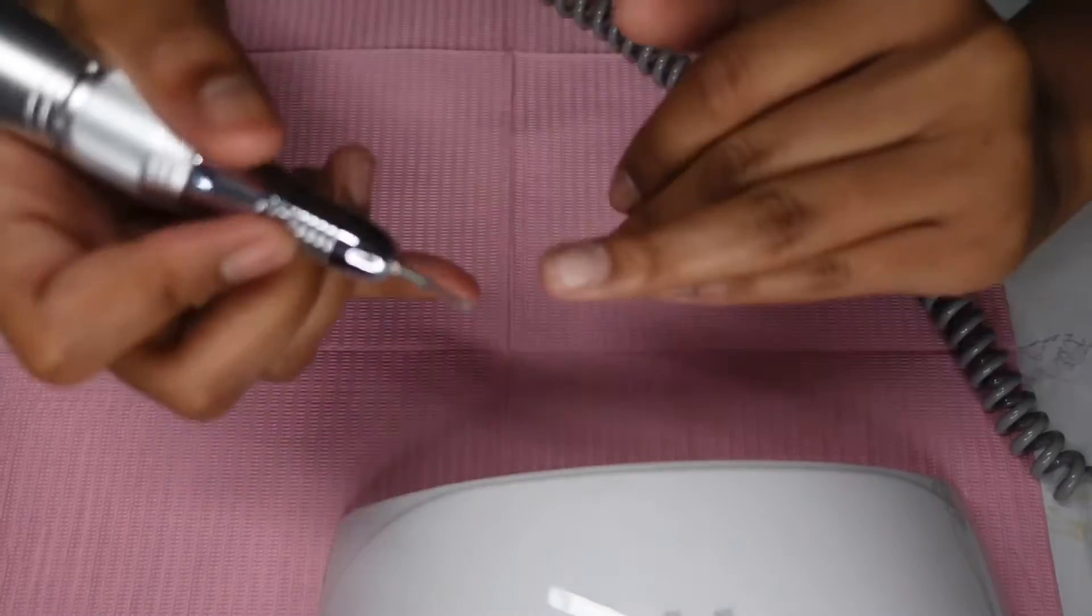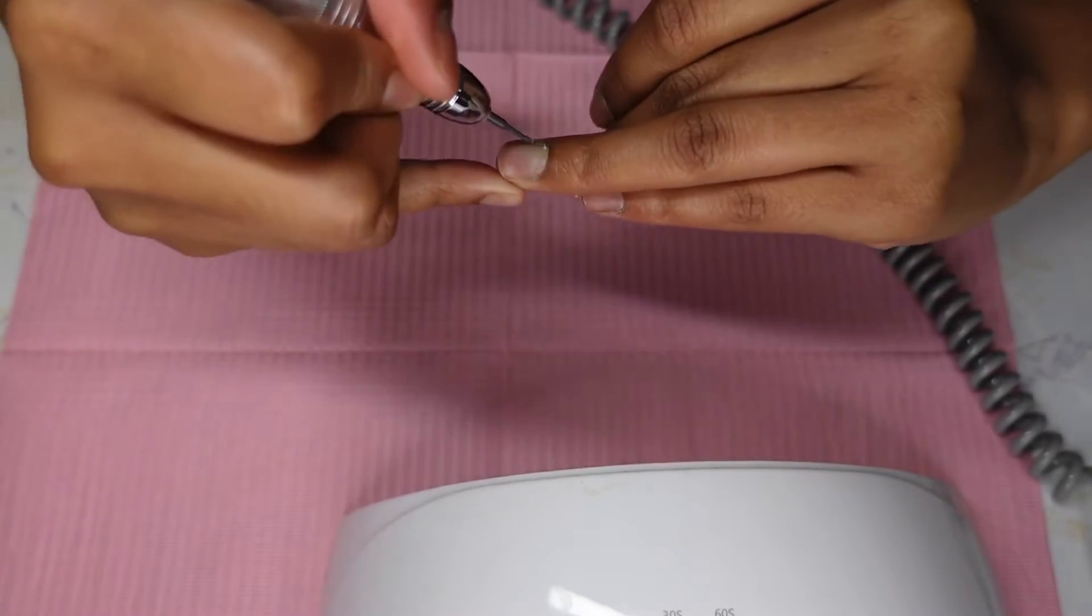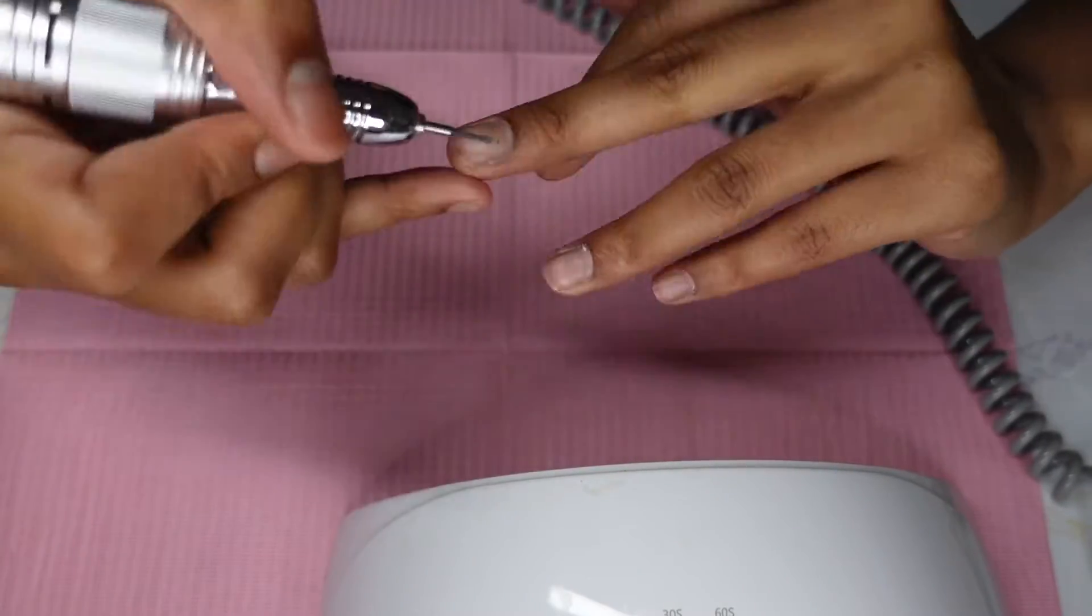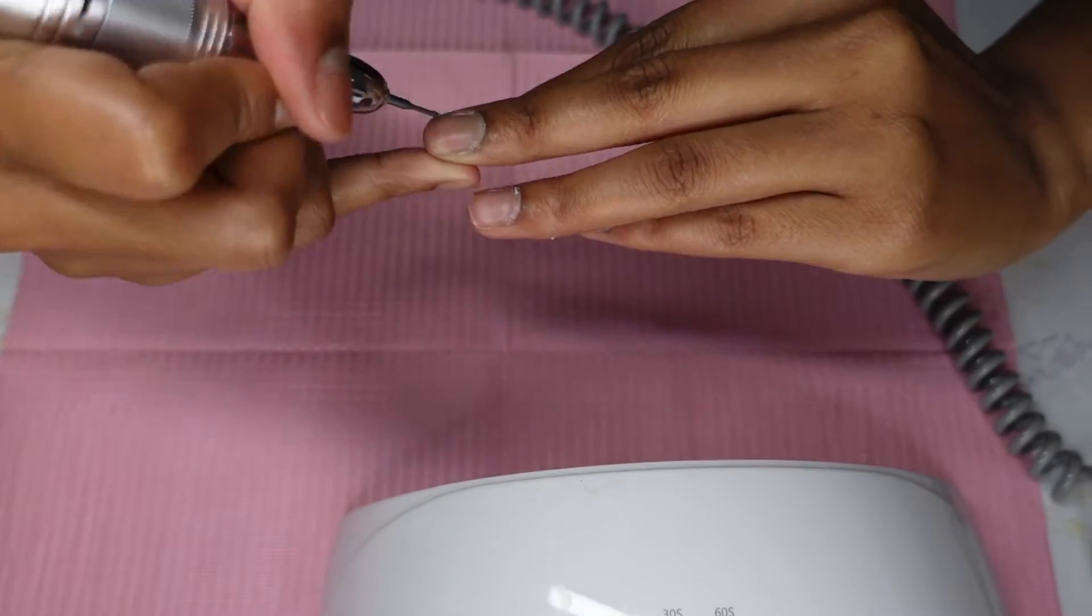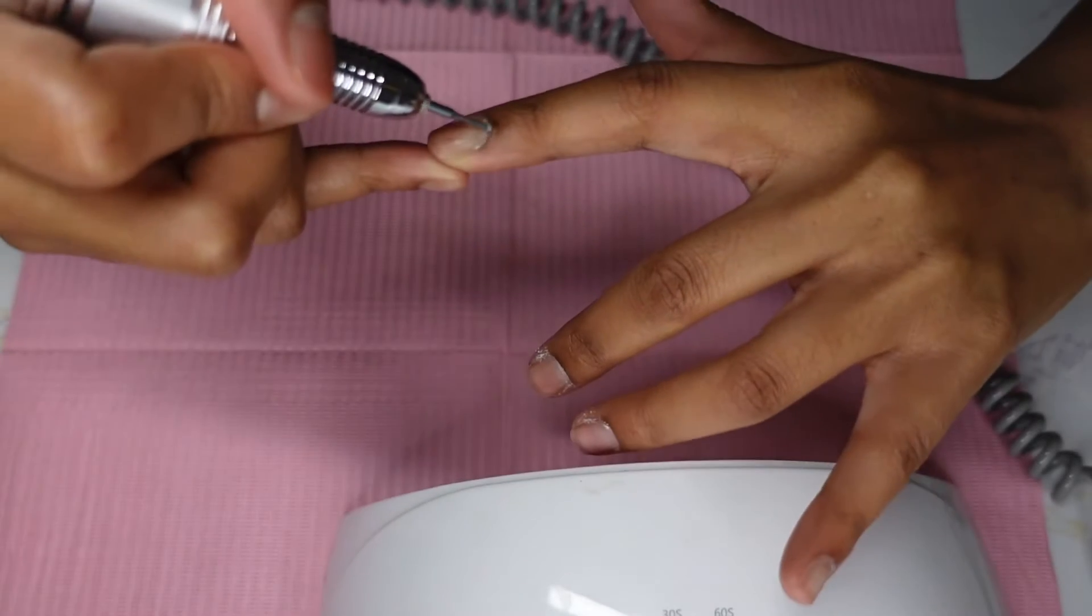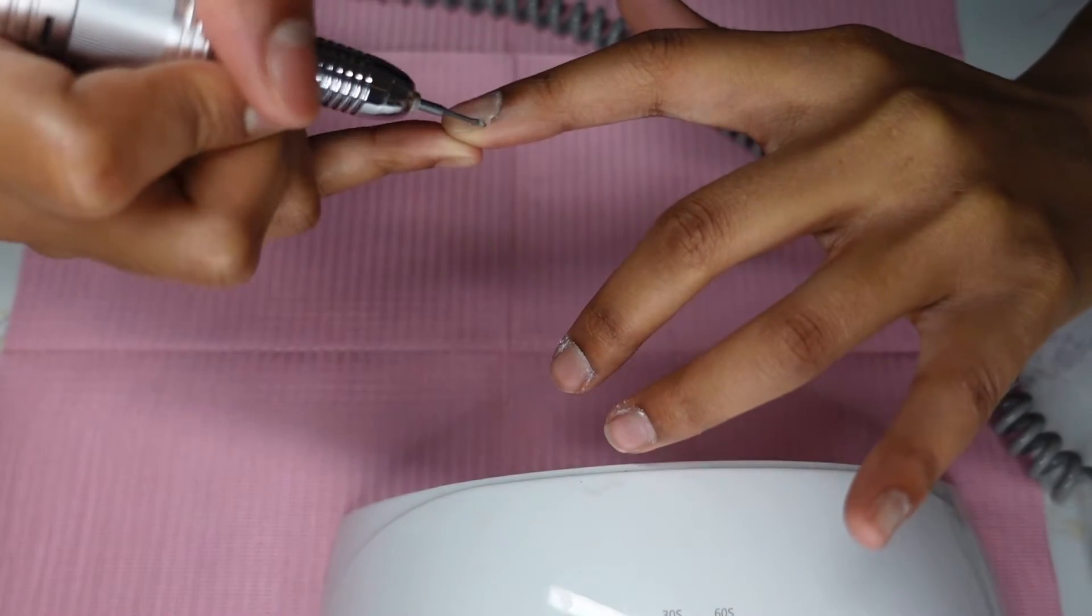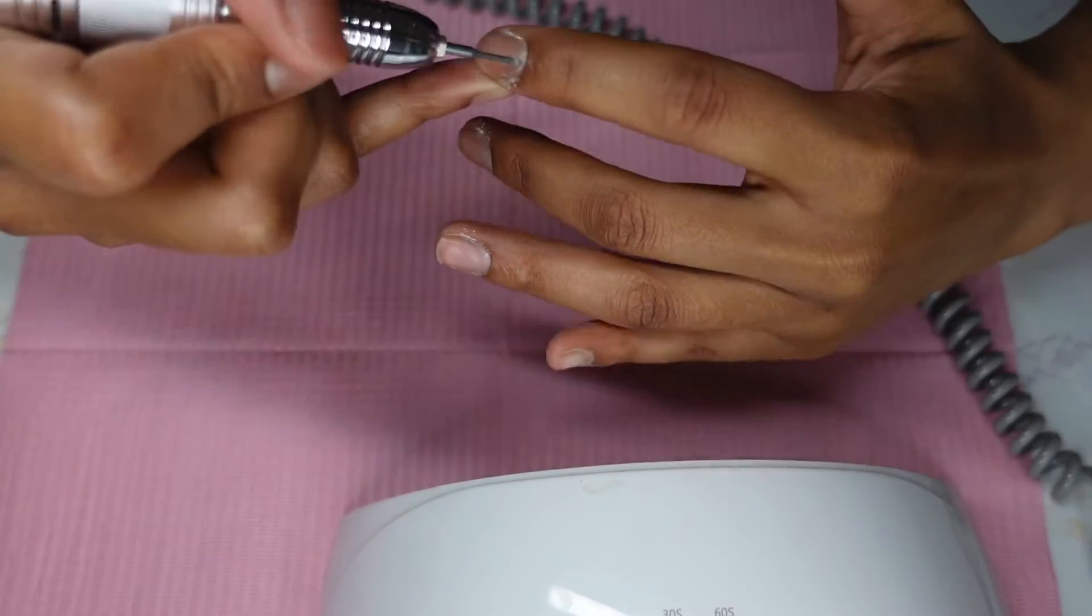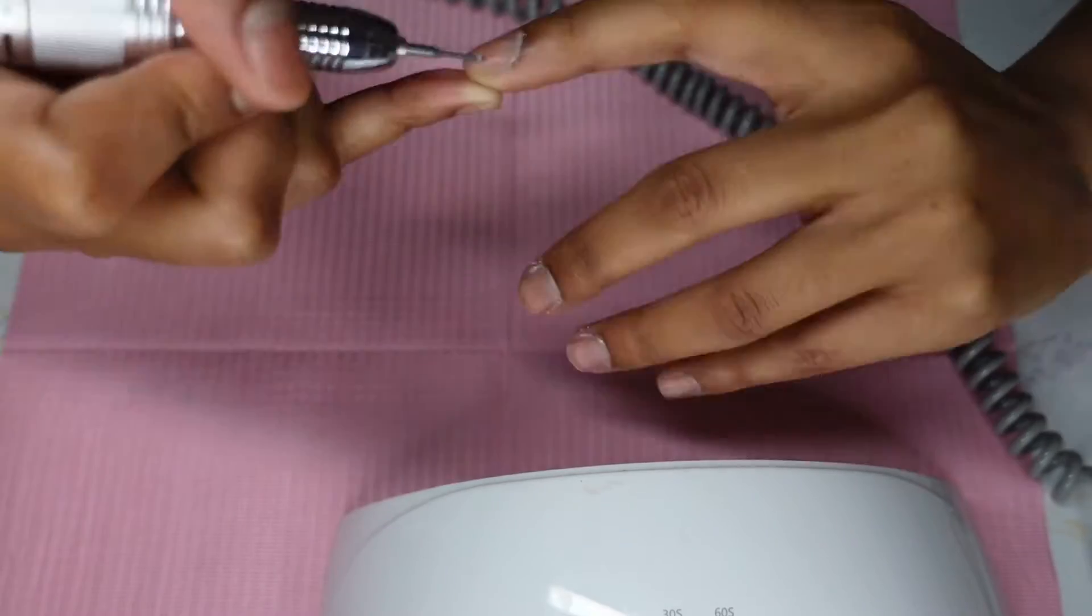Now I'm going in with my cuticle nail bit. This is just going to remove all of that extra cuticle that we just pushed back and got out of the way. It's going to also ensure that your nail beds are totally clean and free of any extra residue or dirt that your client may have had under their fingernails.